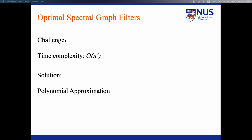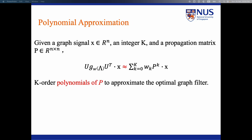Given a graph signal x, an integer K, and a propagation matrix P, polynomial approximation utilizes a K-order polynomial of P to approximate the optimal graph filters.